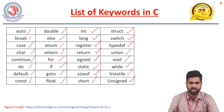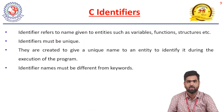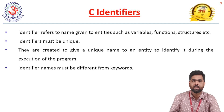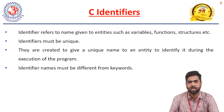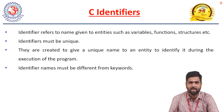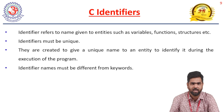Now we will discuss identifiers, one of the C tokens. Identifiers are very important in programming because we need to follow all the rules for identifiers while coding. An identifier refers to the name given to entities such as variables, functions, and structures. Basically, the names we use in a C program are called identifiers.